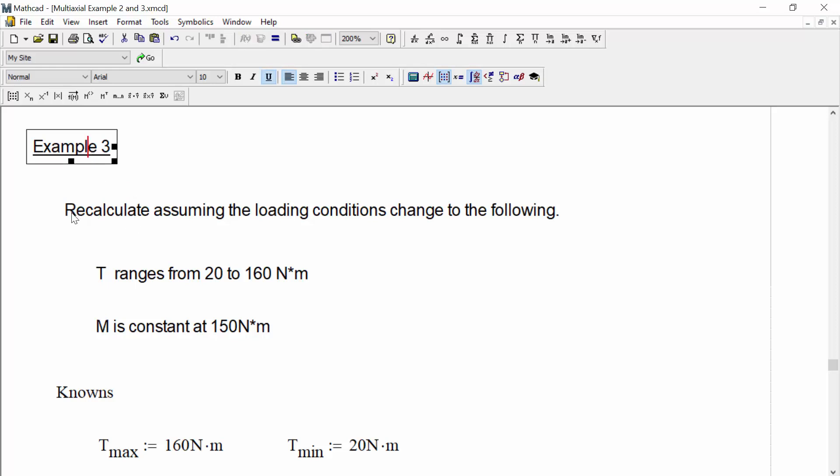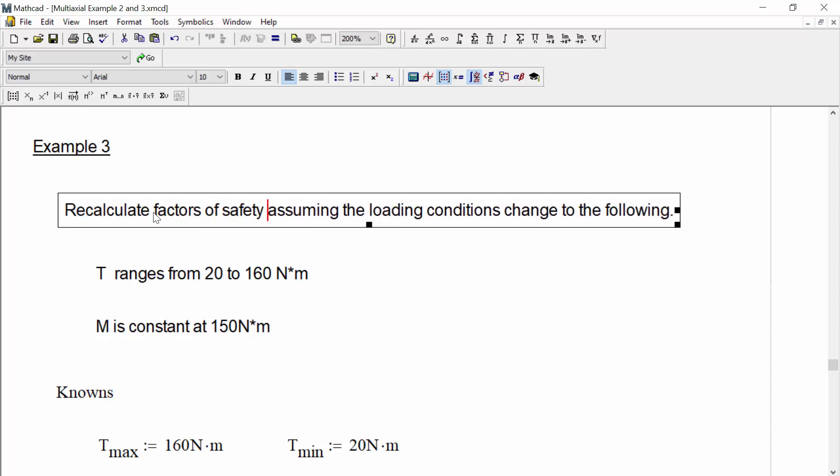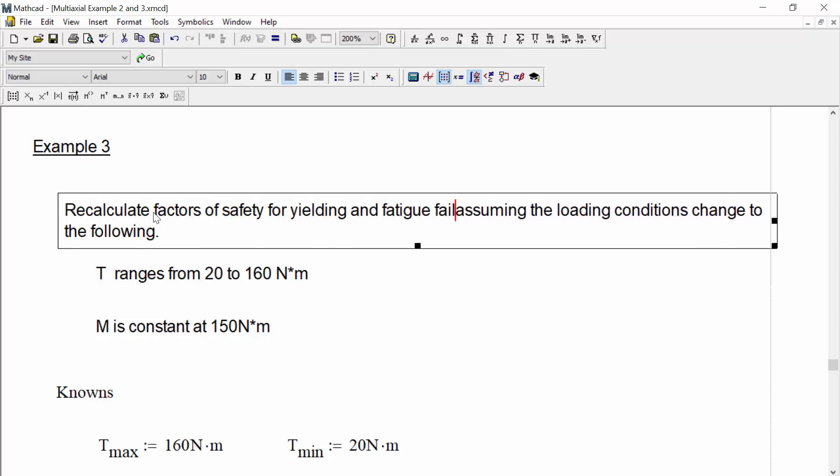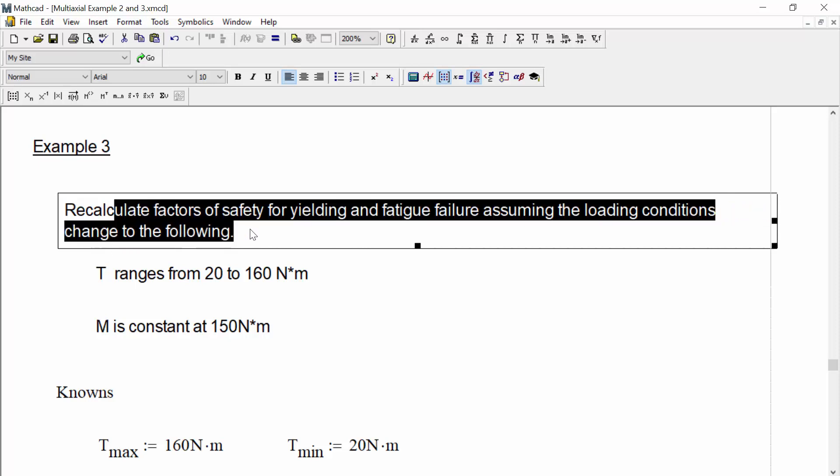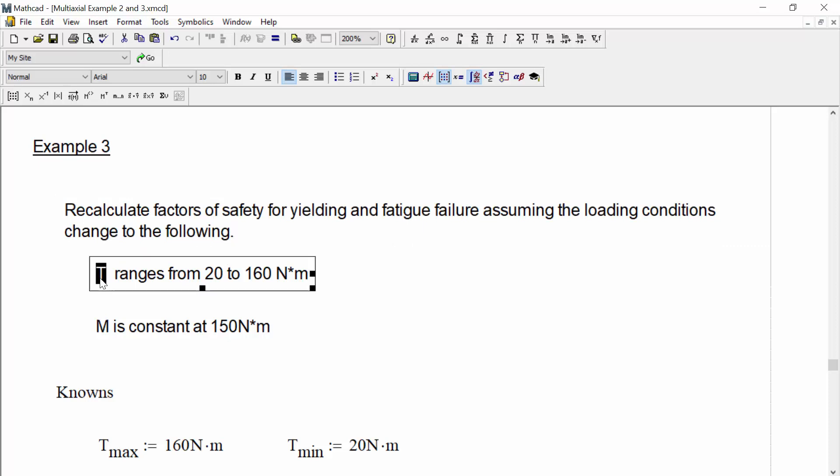In example 3, we're asked to recalculate the factors of safety for yielding and fatigue failure, but assuming the new loading conditions below, where the torque ranges from 20 to 160 newtons times meters, and where the bending moment is now a constant value of 150 newtons times meters. So now we have this torque that's not fully reversed, where we're going to have a mean torque, and where the normal bending load is going to be a constant value, it's static.